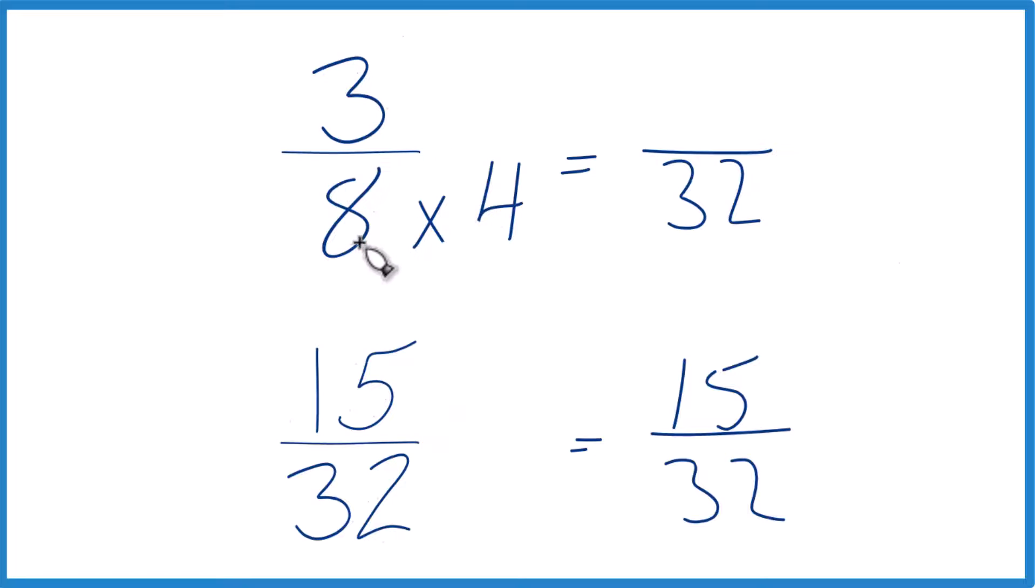And since we multiply the 8 times 4, we also need to multiply 3 times 4. That's because 4 over 4 is just 1. We're multiplying by 1. We don't change the value, just the way it's represented. 3 times 4 is 12. Now we have the same denominator.